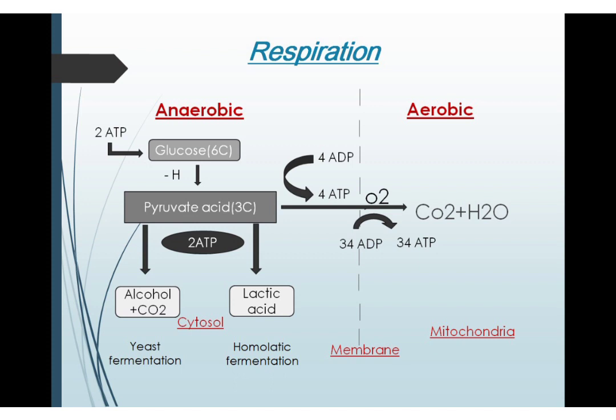Once the pyruvate molecule is formed, it either follows an anaerobic pathway or an aerobic pathway according to the availability of oxygen. Remember, glycolysis occurs in the cytosol. So if oxygen is present, the pyruvate molecule will diffuse into the mitochondria, producing CO₂ and H₂O via aerobic respiration. This kind of respiration produces 34 ATP from 34 ADPs.